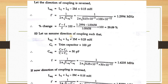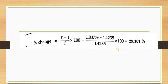For the reversed coupling direction with L_eq = L1+L2−2M = 0.15 mH and C_eq = 50 pF, substituting into F = 1/(2π√(L_eq · C_eq)) gives F' = 1.83776 MHz. The percentage change in frequency = (F'−F)/F × 100 = +29.101%.